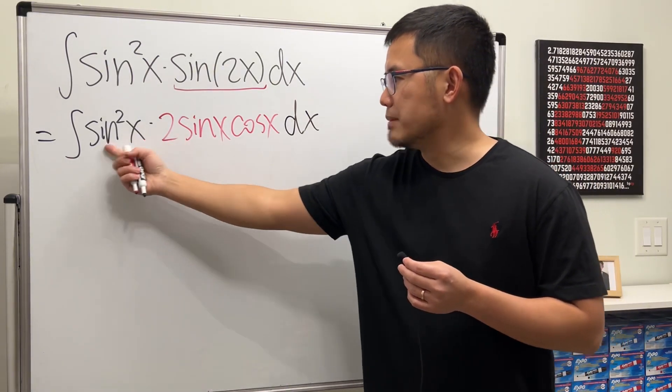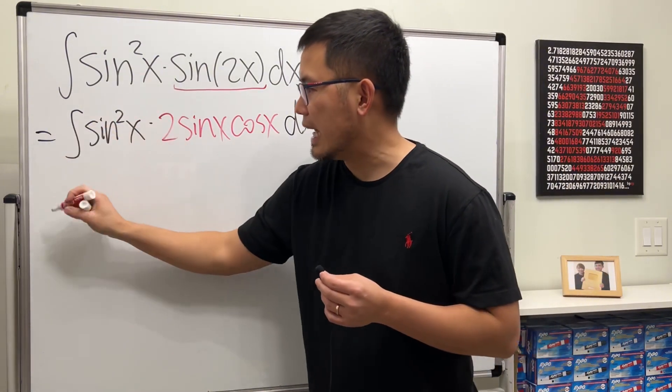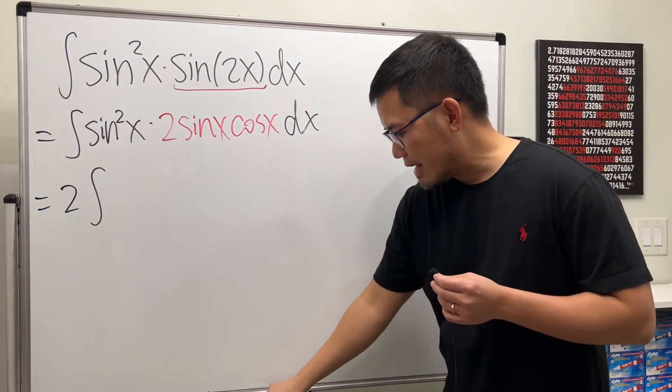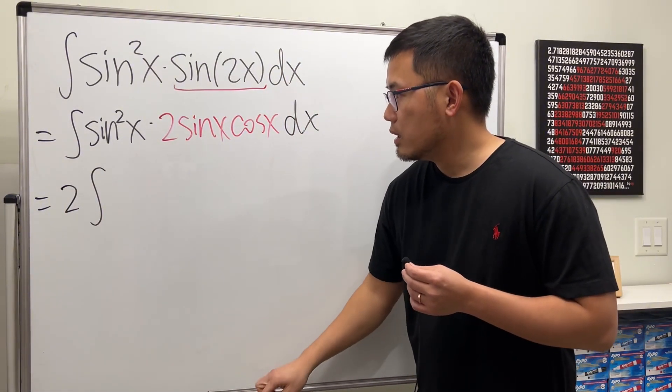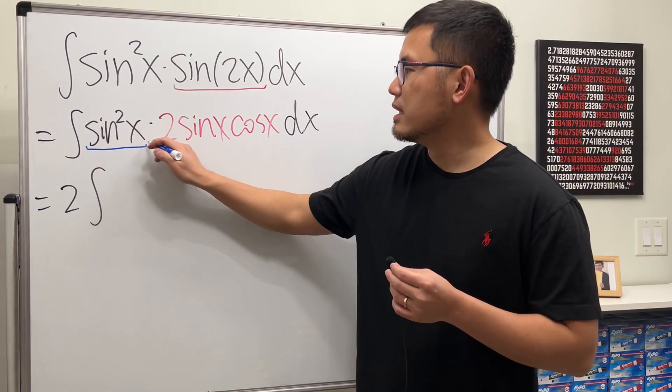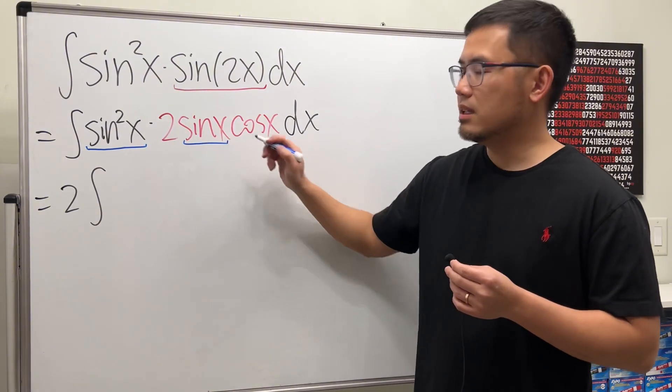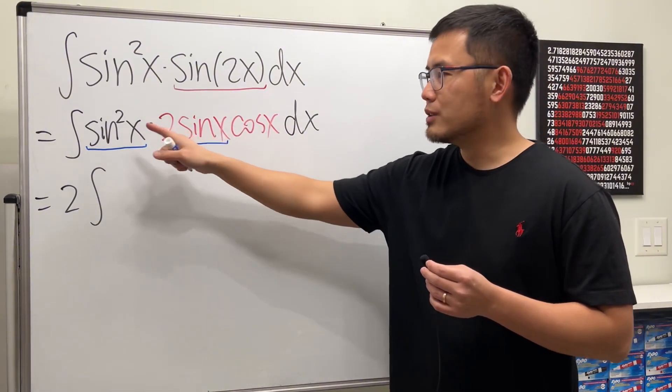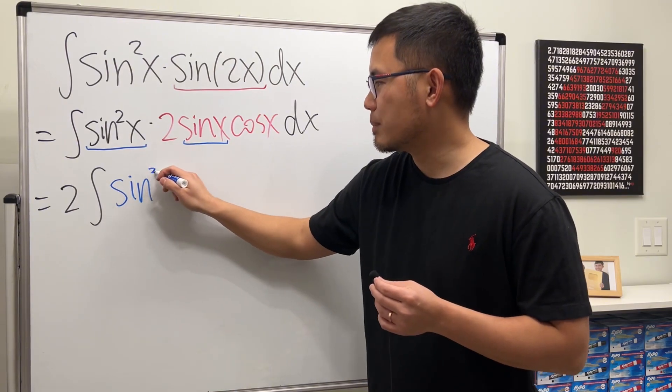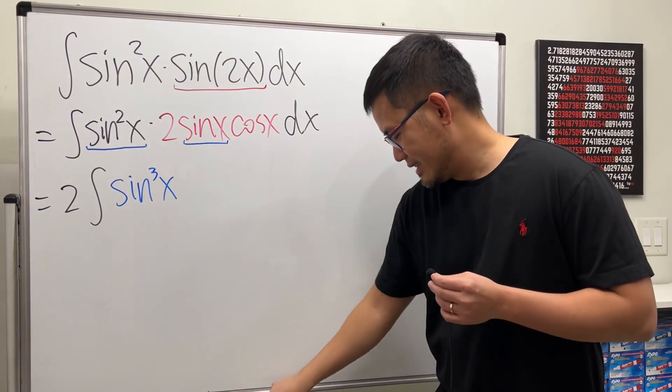Now this is just two times this and that, so we can put the two on the outside. So we have two times the integral. Have a look right here: we have sine squared x times sine to the first power x. So multiply it all together, we get sine to the third power x, and then of course